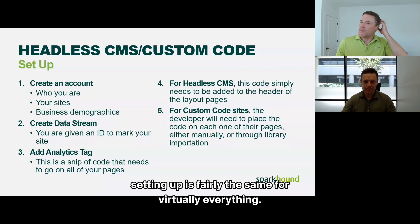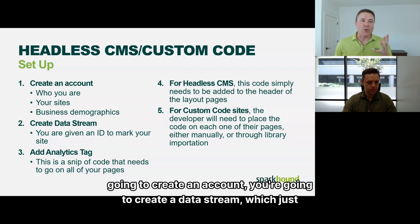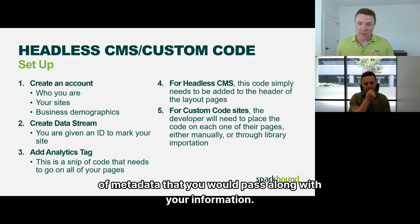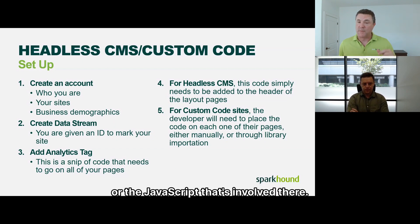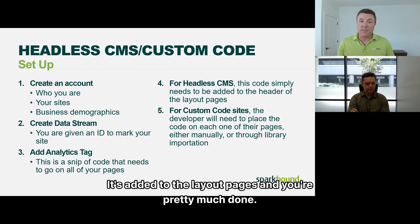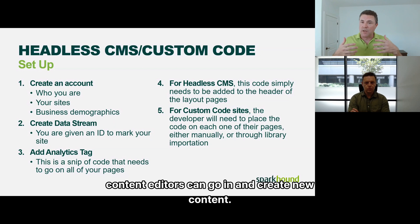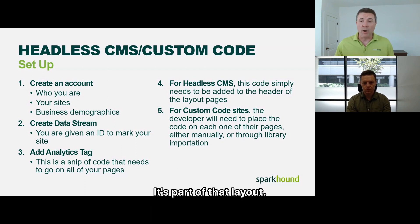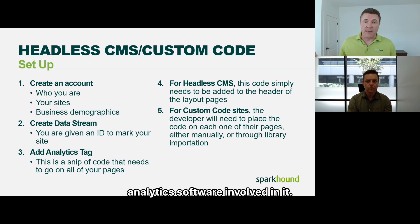Setting up is fairly the same for virtually everything. With headless CMS like Storyblock and custom code, you create an account, create a data stream which gives you an API key, and you'll have a tag — a piece of metadata passed along with your information. For the headless CMS, your code needs to be added to the header of the layout pages or the JavaScript involved. What's nice is that the layout pages I set up now mean content editors can go in, create new content and new pages, and analytics is automatically included.